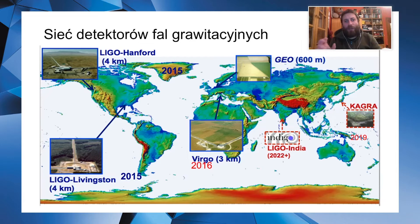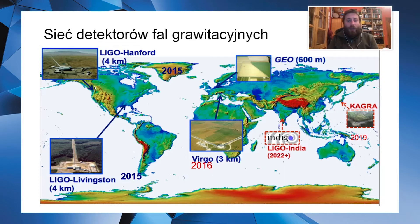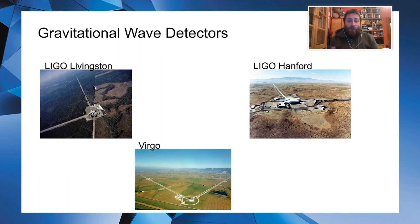We can observe the universe by observing changes in the space-time metric — tiny changes in space-time curvature that we can register. On Earth, we have three giant rulers which are gravitational wave detectors, measuring how the space-time curvature changes. Through these detectors we can see events like colliding neutron stars, colliding black holes, or neutron stars with black holes. We also hope to see signals from rotating neutron stars or collapsing very massive stars.